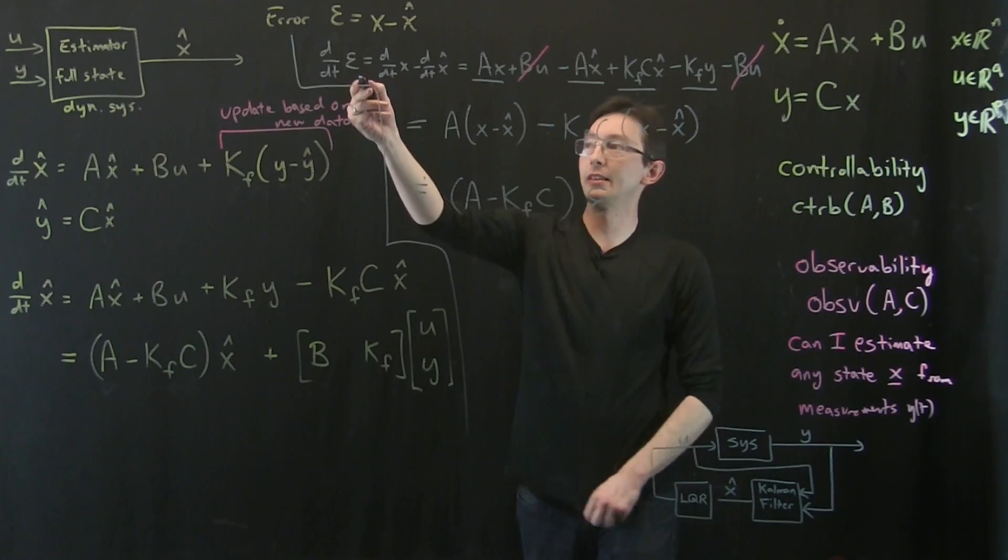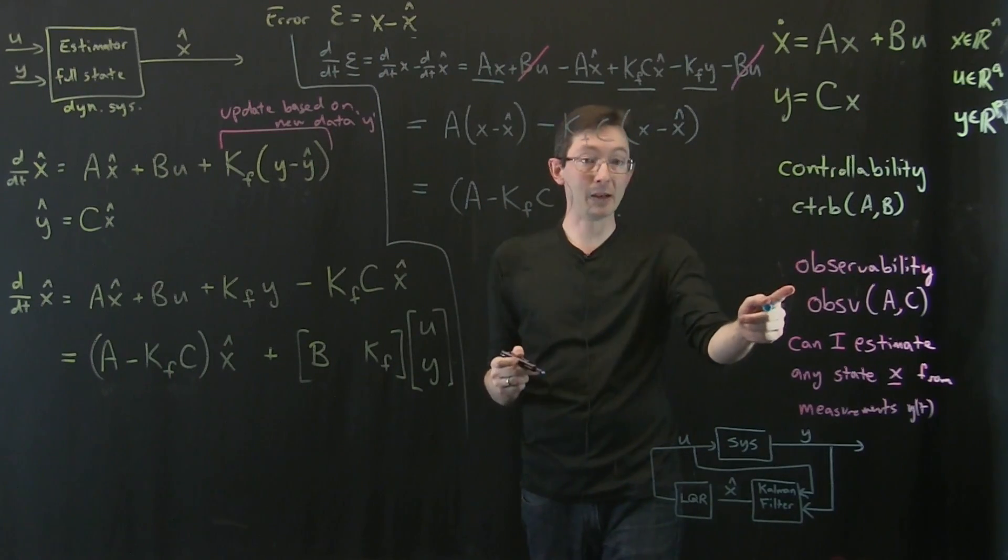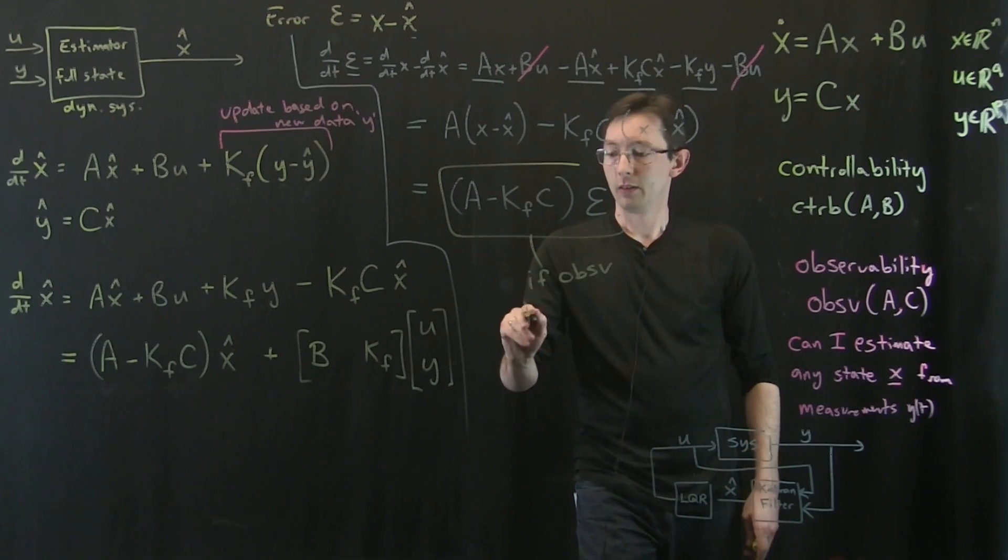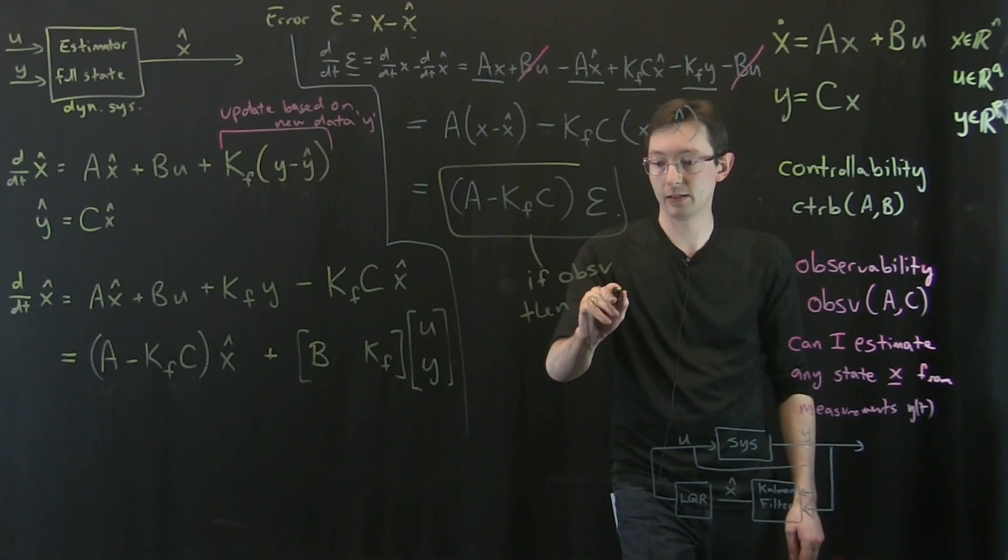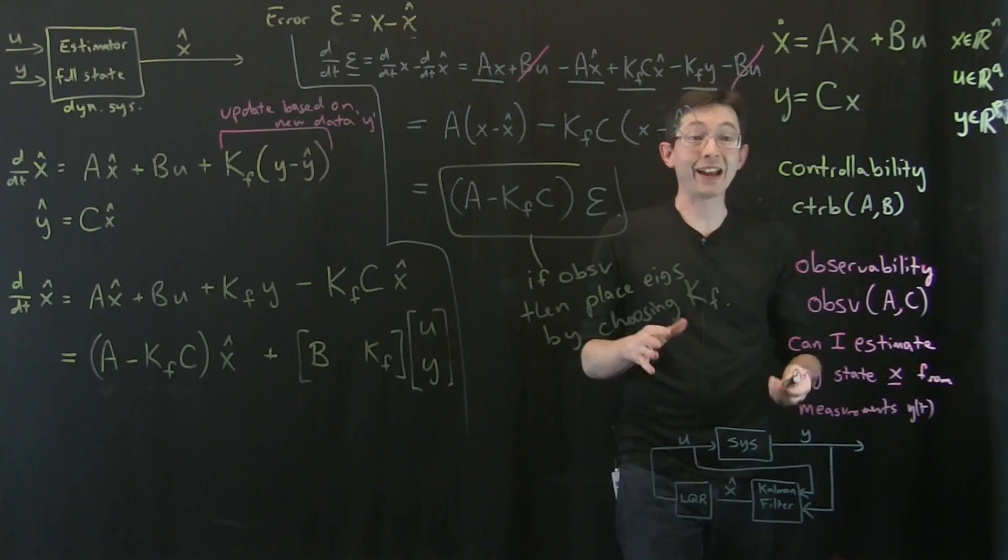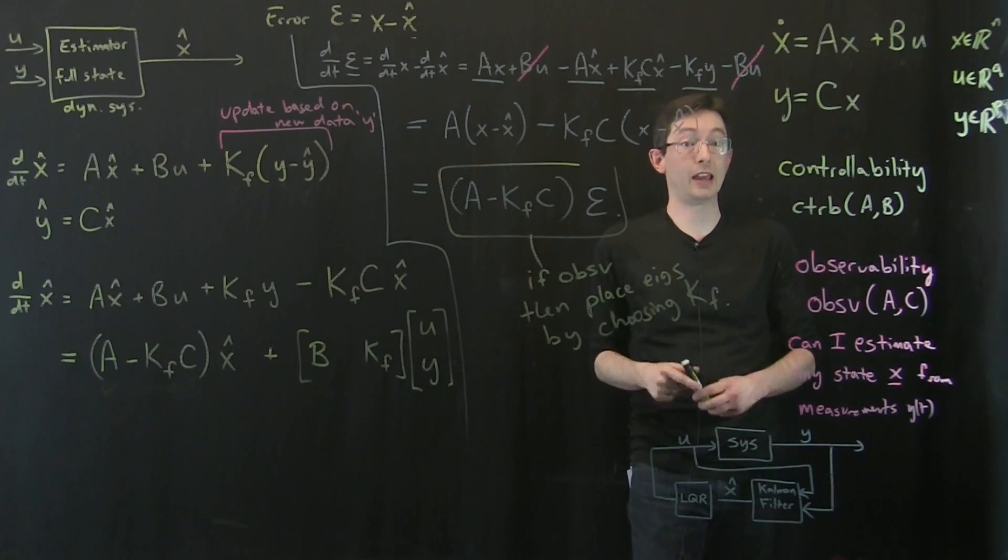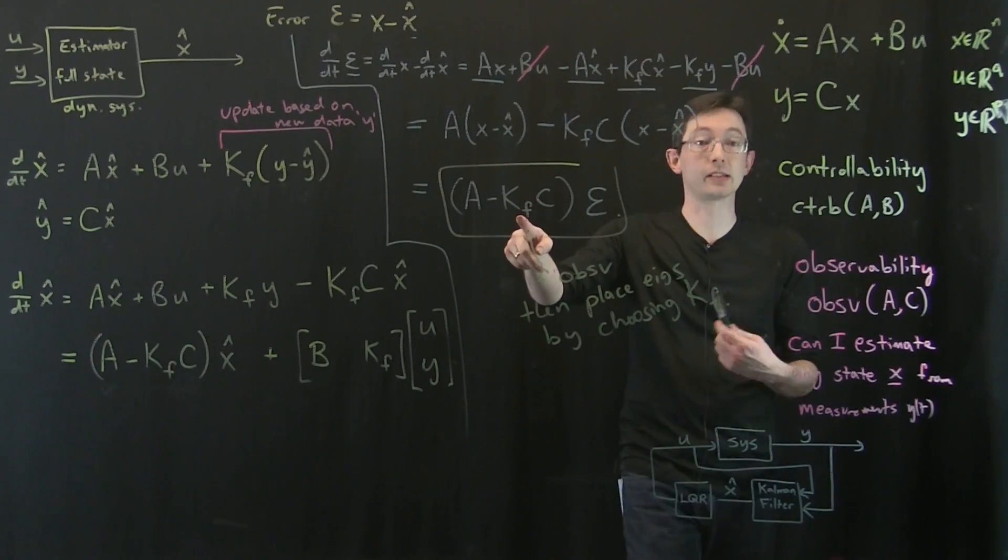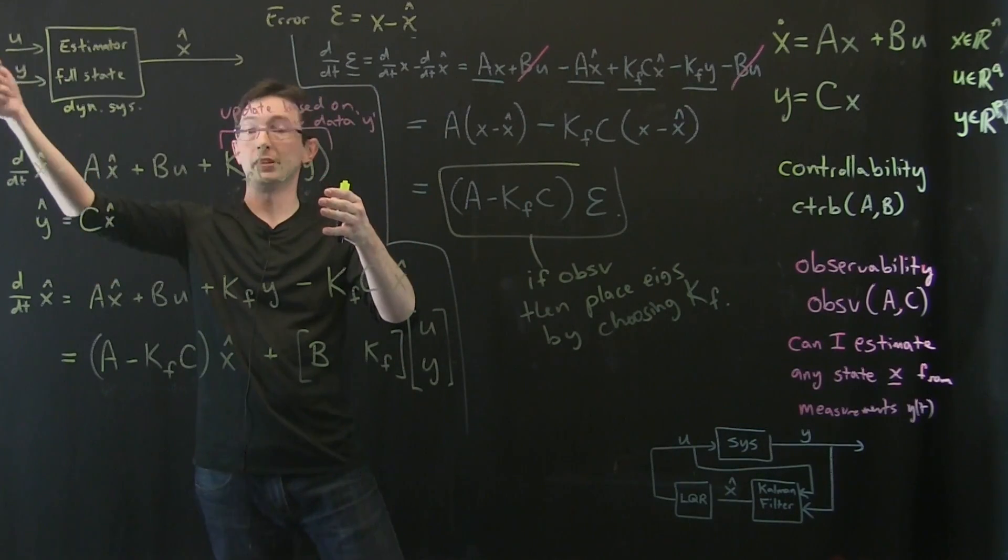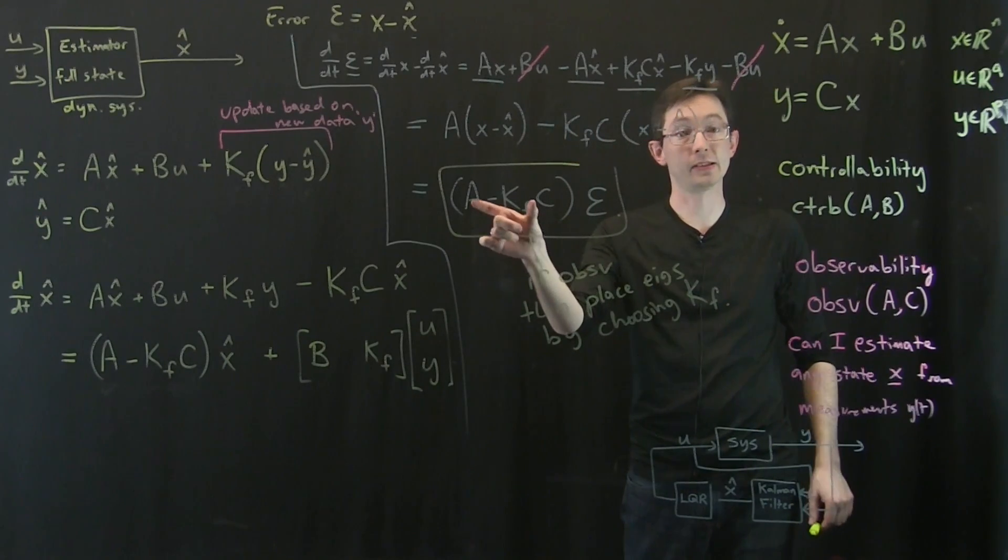So what does this tell us? This tells us that this error between my full state, my true full state, and my estimated full state, can be made stable and go to zero if my system's observable. So remember, if observable, if OBSV, then I can make this as stable as I want. Then I can place the eigenvalues by choosing KF. And I mean, I can actually literally use the LQR command if I wanted to, or the place command with A and C transpose. And I could determine this gain matrix for a given set of eigenvalues that I want this to have. But the upshot is, if my system's observable, I can build this dynamical system with the inputs U and Y that will stably converge to the full state of the system. I can make this epsilon go to zero by making these eigenvalues stable.